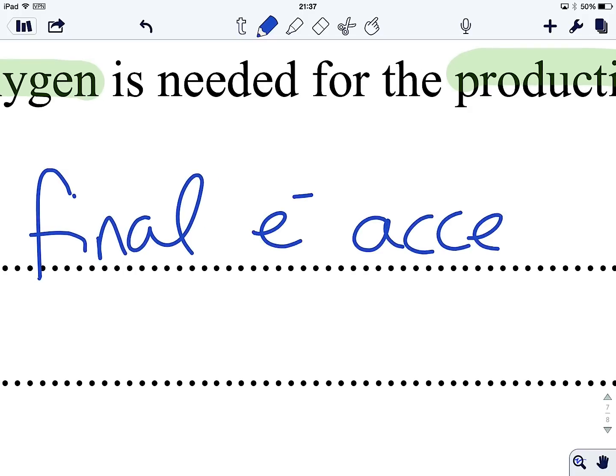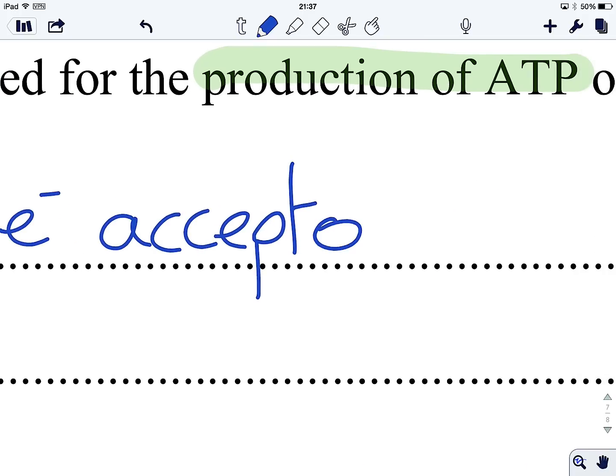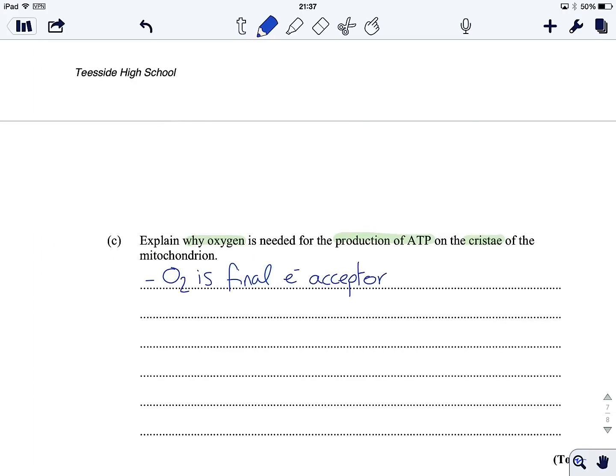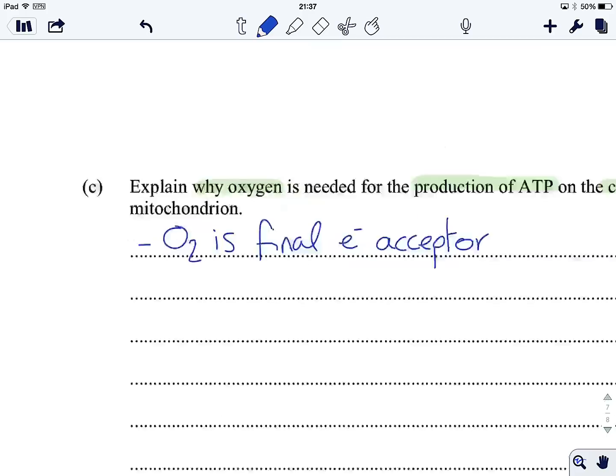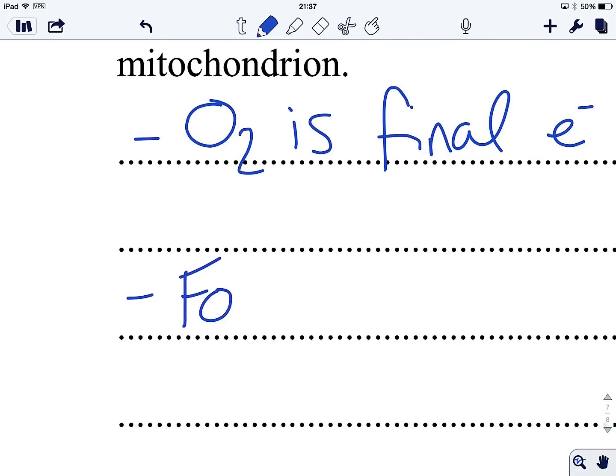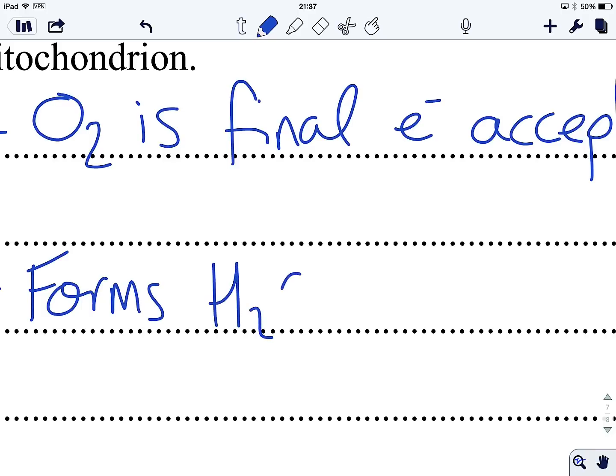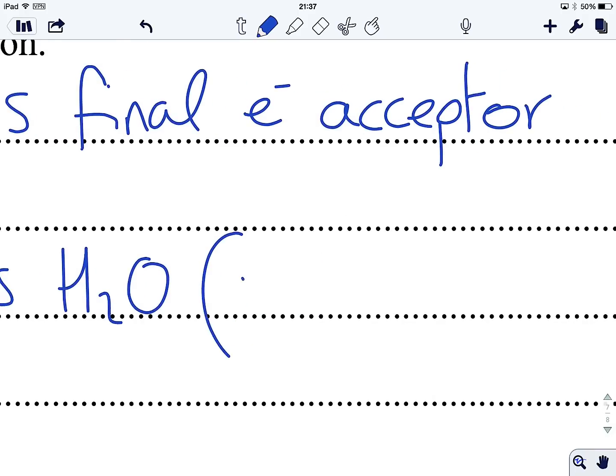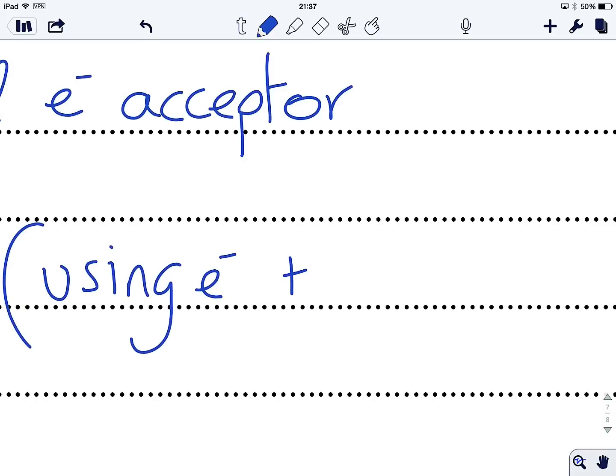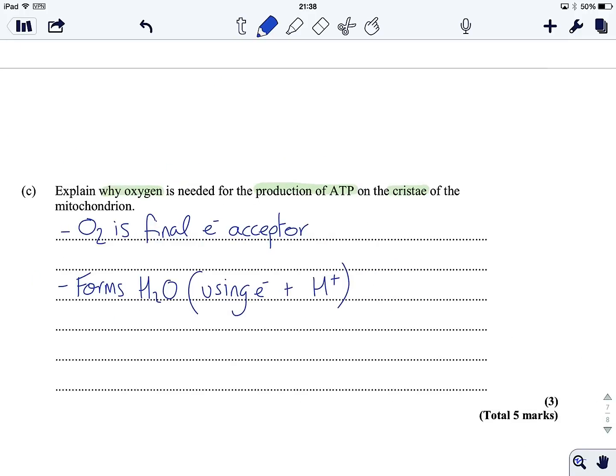It's going to mop up the electrons from the electron transport chain. It's also going to mop up the protons as well. And by doing that, it forms water. It forms water using E minus electrons and H plus protons. That's only two marks though, and it wants three. So it's saying, why is it needed for the production of ATP? So we're going to attack that question by saying, what would happen if we didn't have oxygen?